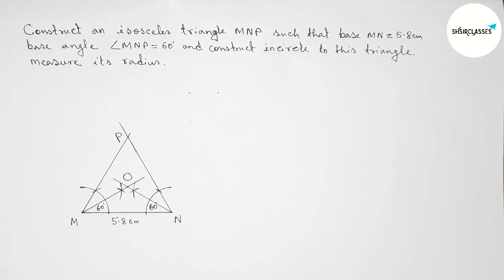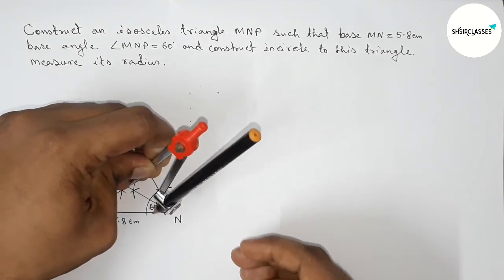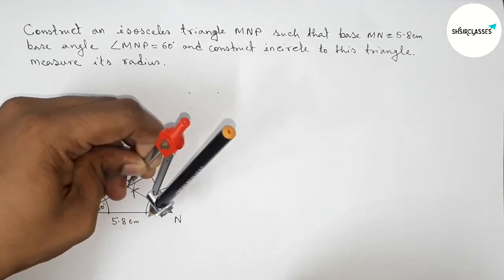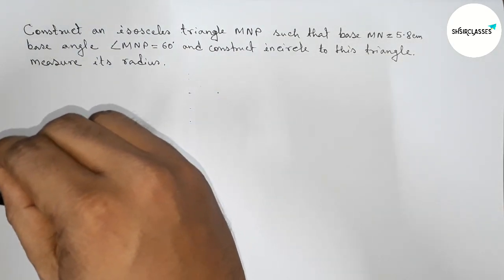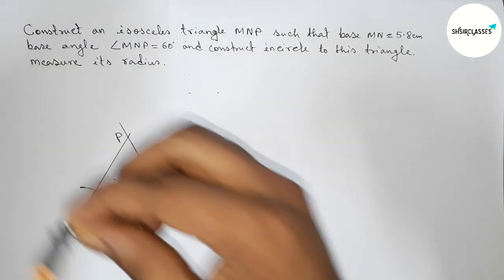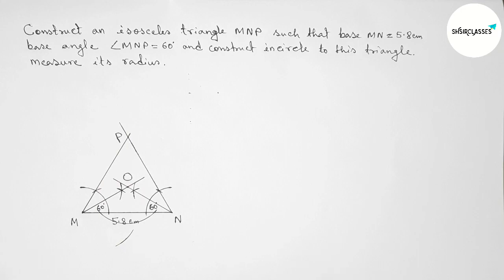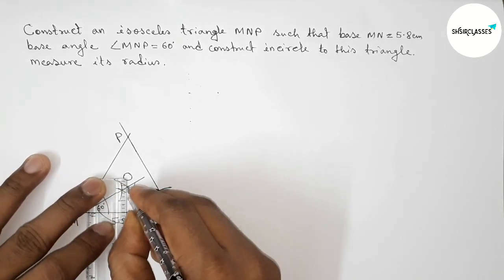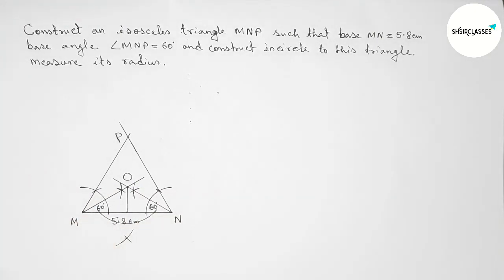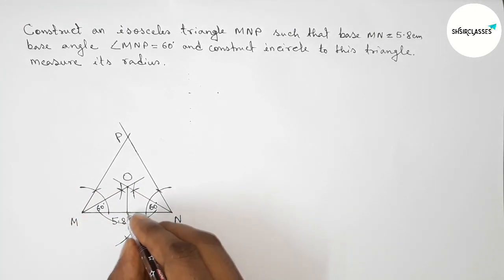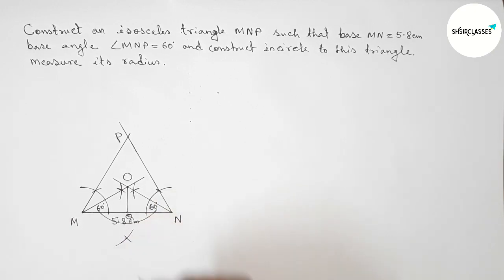Next we draw a perpendicular line from point O to the line MN. Taking a length with the compass and drawing an arc that meets MN at two points. Putting the compass at each intersection with the same length and drawing arcs to find the perpendicular foot. Joining this line from point O — we take this foot point as Q, so OQ is the radius.